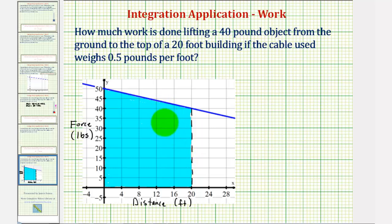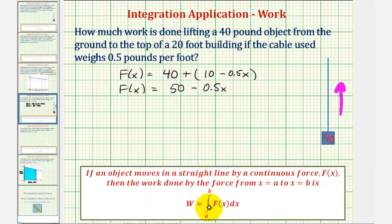So we could find this area using the area formula for a trapezoid, but let's use a definite integral, where the work would be equal to the definite integral of f of x from a to b, where in our case from a to b would be from 0 to 20 feet. So the work required would be equal to the integral of 50 minus 0.5 x from 0 to 20.